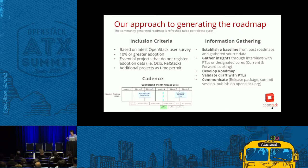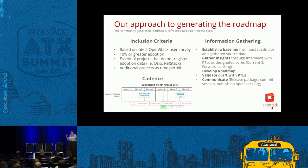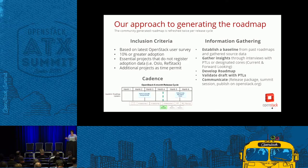We're including 28 projects in this version of the roadmap. We start by looking at the baseline from the previous roadmap, then do data mining around mid-cycle ether pads, specs, and other repos. We then sit down with the PTLs for the different projects for a structured interview to understand what's accurate from what we data-mined and what additional insights they want to add.